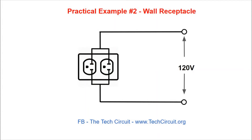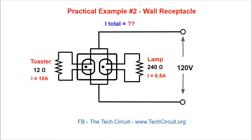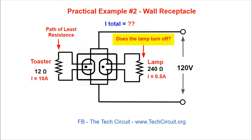What about a typical household wall receptacle, which is a great example of a commonly found parallel circuit? If you plug in a 240 ohm lamp, you'll get about half an amp through both the lamp and the receptacle. Now suppose you plug in a 12 ohm toaster, which is now the path of least resistance. If current took only the path of least resistance, the lamp — being a higher resistor value — would just shut off. But of course that's not what happens. The lamp stays on and the total receptacle current simply increases to accommodate both the lamp and the toaster.